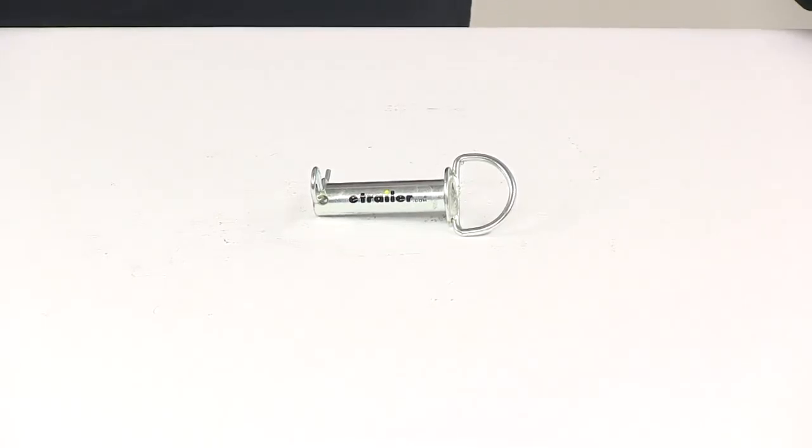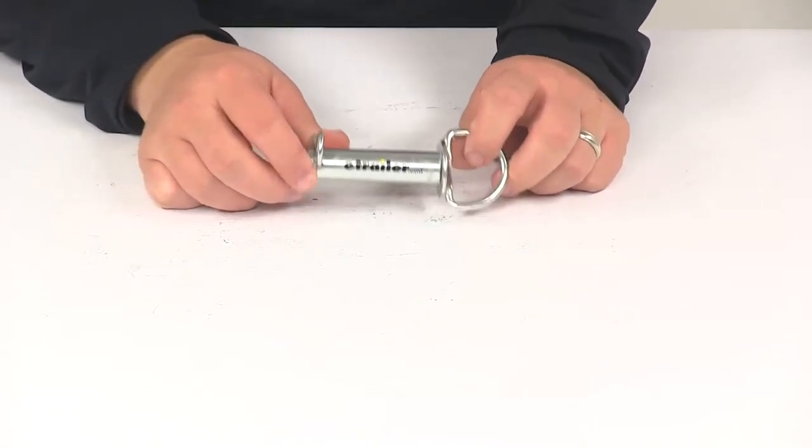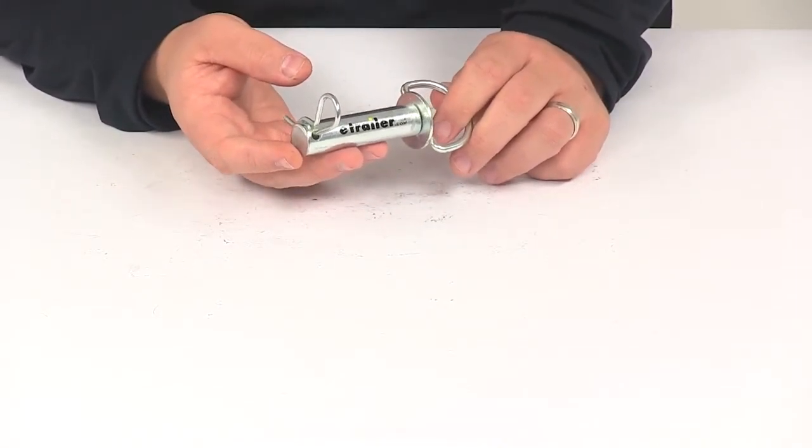Today we're going to be taking a look at the Brophy Clevis Pin. This is a three quarter inch diameter pin that's going to let you hook up your equipment to your hitch mounted clevis.